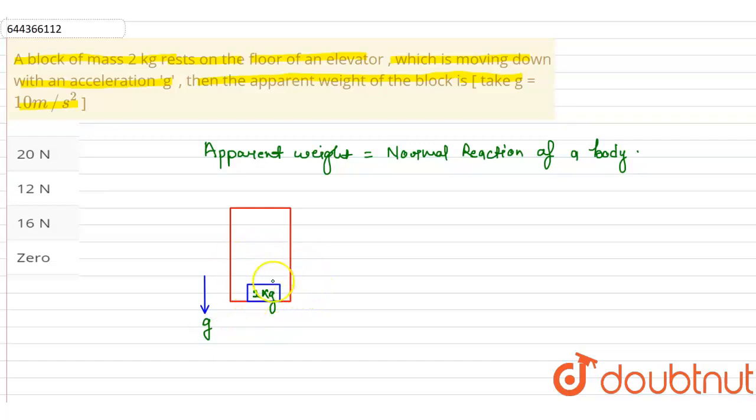The free body diagram of this block shows the forces acting on it: normal force N in the upward direction and mg in the downward direction, which is 20 newtons.